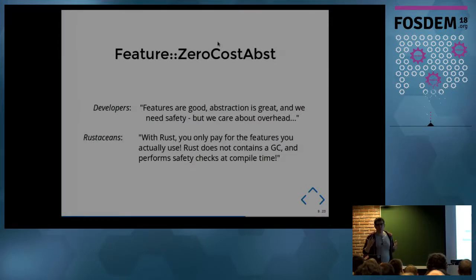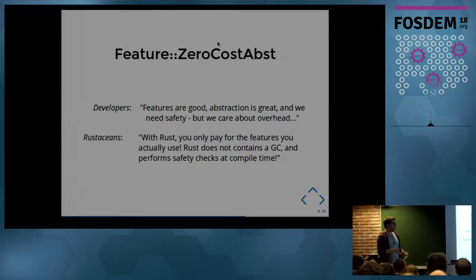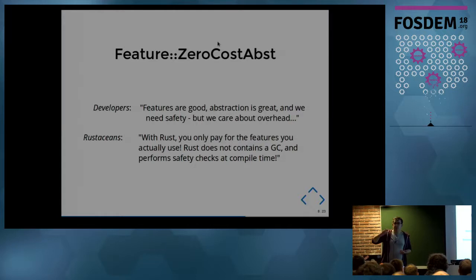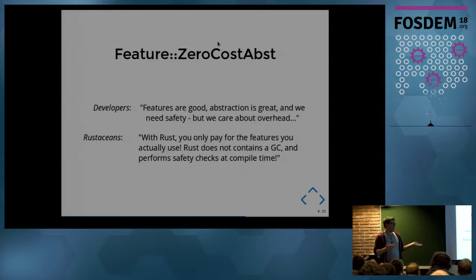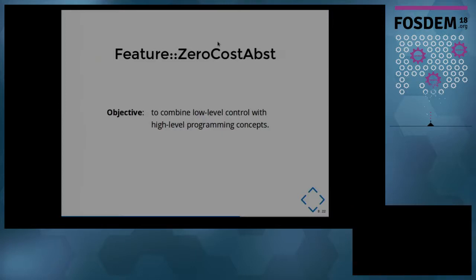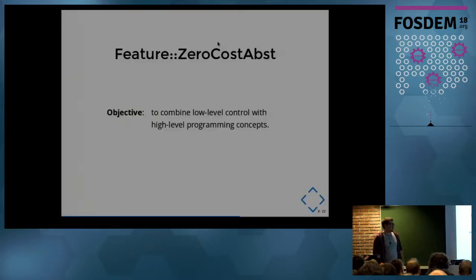Developers say: features are good, abstraction is great, and we need safety today — but we care about overhead. Rust developers respond: with Rust, you only pay for the features you actually use. Rust does not contain a garbage collector. The compiler adjusts the lifetime of variables and references at compile time and performs safety checks at compile time. So you obtain the same performance at runtime as C++, but with safety. For zero-cost abstraction, you can combine low-level control with high-level programming concepts — which is huge for a modern programming language.